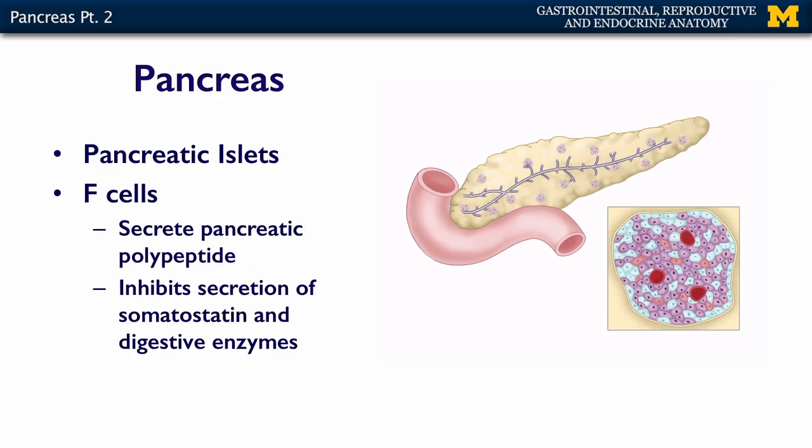The last cell type in the pancreatic islet is the F cells. The F cells secrete something called pancreatic polypeptide. This peptide inhibits the secretion of somatostatin from the delta cells, and also inhibits the creation and secretion of the digestive enzymes of the rest of the exocrine pancreas.